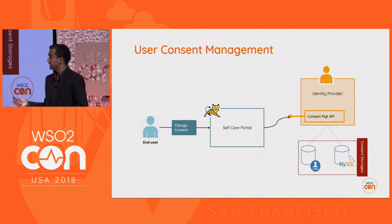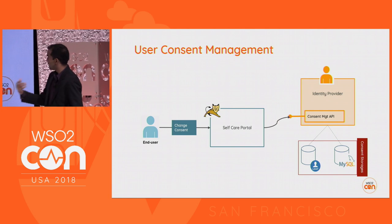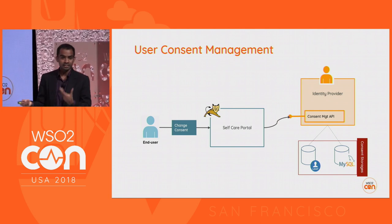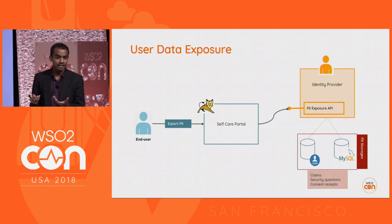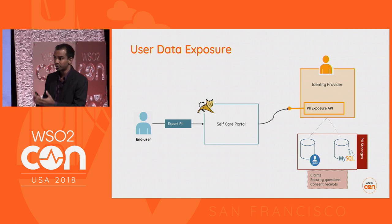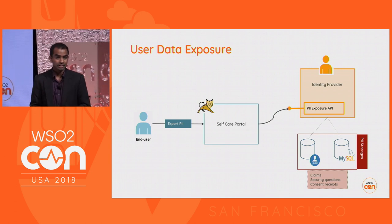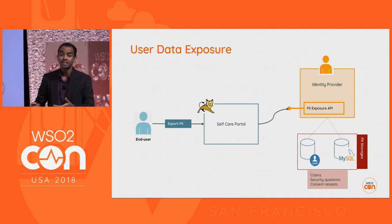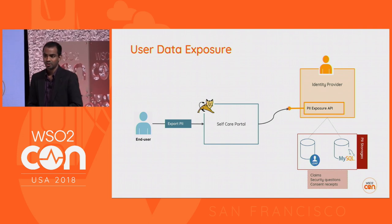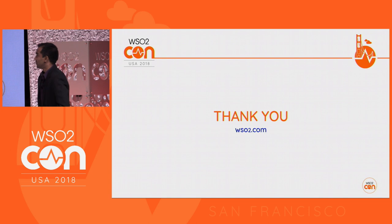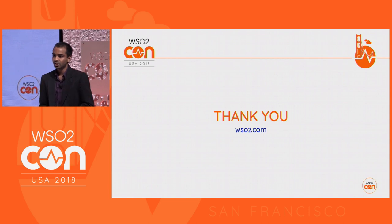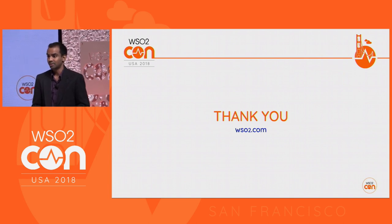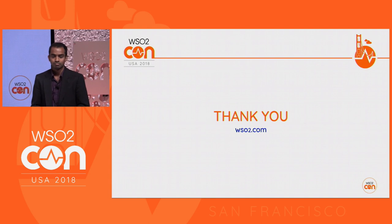Regarding user consent management, there are APIs that give end-users access to the consents they have given, and APIs that provide access to the user's PII data. Users should be able to download that data at any time and ask the IAM provider to delete it — especially in accordance with GDPR and other recent regulations. These are some of the key APIs relevant for today's problems. Thank you very much.